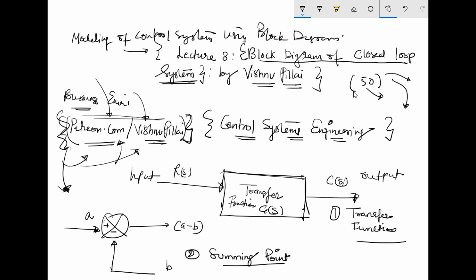The block diagram of a closed loop control system — before going into that, I would like to mention two important components of any block diagram. One is a transfer function, which I explained in the previous lecture. There will be an input to any transfer function and there will be an output.